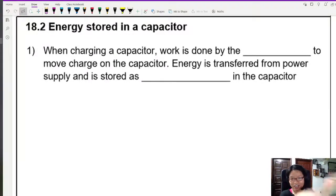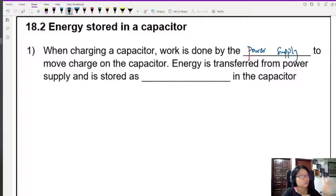When we talk about charging and discharging of capacitors, we also notice that there is work done. For example, when we charge a capacitor, work is done by the power supply to move the charges onto the capacitor. This energy is transferred from power supply and is stored as electrical potential energy in the capacitor.